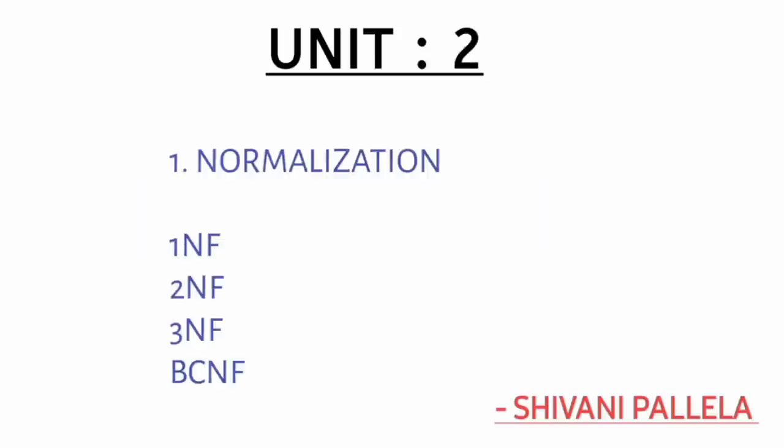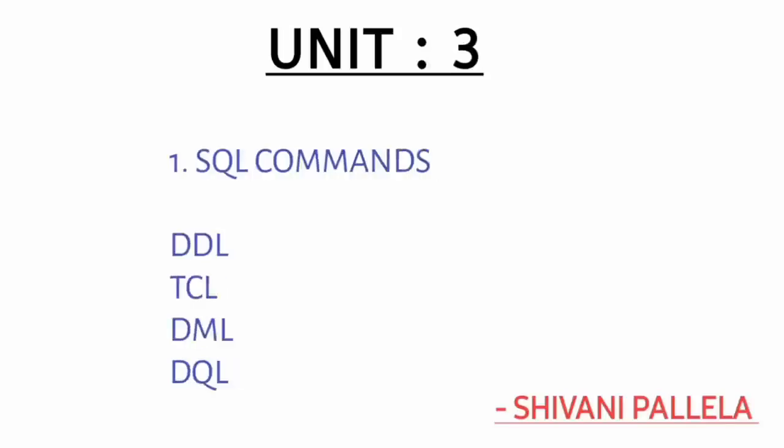In normalization, you have 1NF, 2NF, 3NF, and BCNF. If they specifically ask about 1NF and 2NF, that will be fine. Answer only what is asked — if they ask BCNF, explain only BCNF; if they ask 3NF, explain only 3NF. There is only one question in unit number two.